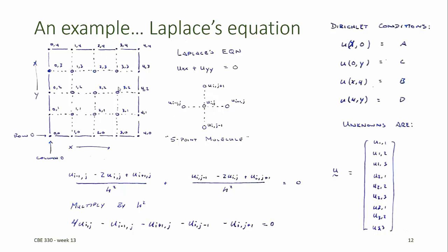At each of the points on the domain where u is unknown, we can write the finite difference approximation of Laplace's equation, for which the value of u is related to the four neighboring points. Using the notation in the textbook, the bottom row of points corresponds to the zeroth row, and the left-hand column of points corresponds to the zeroth column. The textbook author indexes the x dimension first, so the column index is the first value and the row number is the second value, counting up from the lower left-hand corner of the domain.